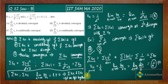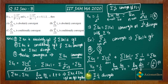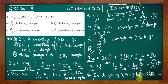Now, summation one by n diverges. We know this by the p-series test: summation one by n to the power p converges if and only if p is greater than one. Using the p-series test, this diverges. Since summation one by n is divergent, summation Un — which is summation mod Tn — is also divergent. So from here we get that summation Tn is not absolutely convergent, therefore option B is incorrect.